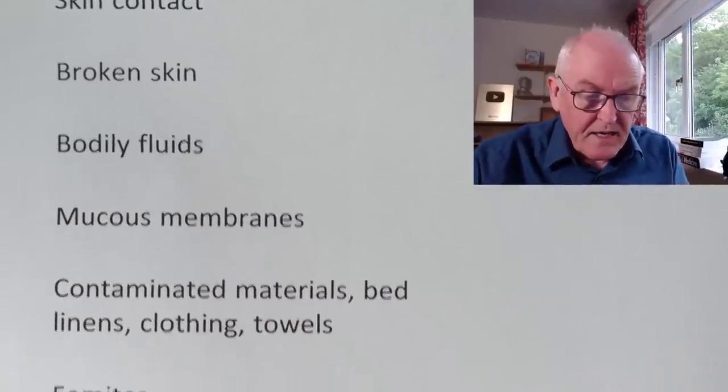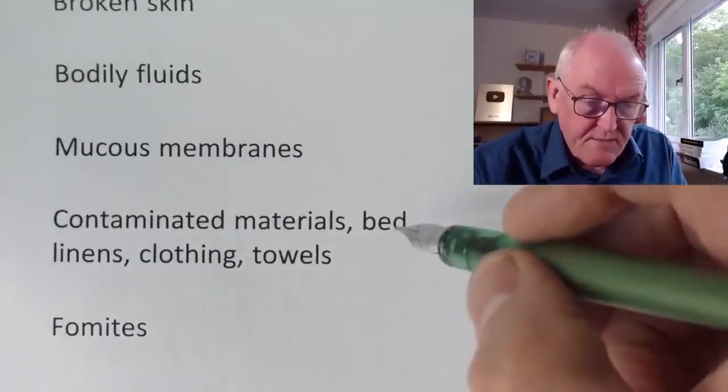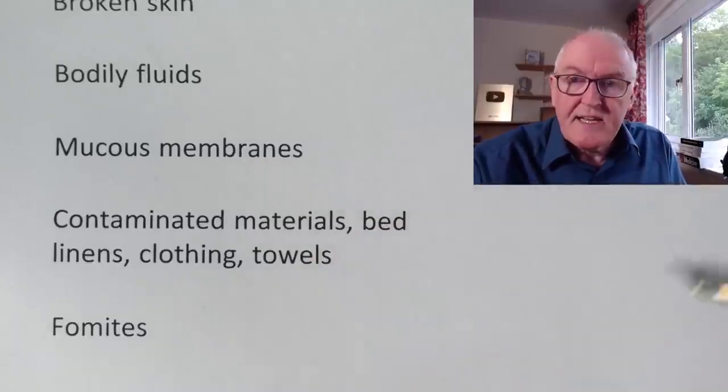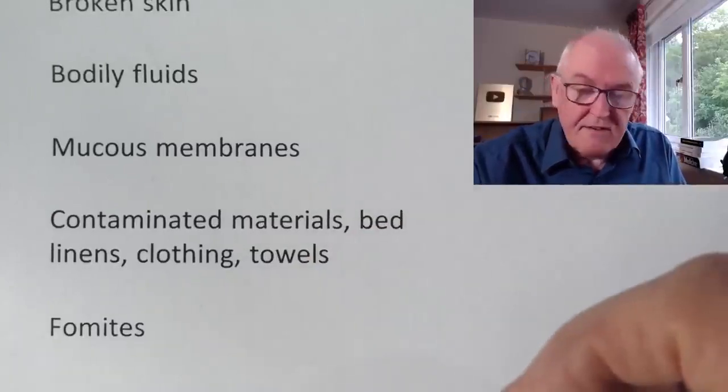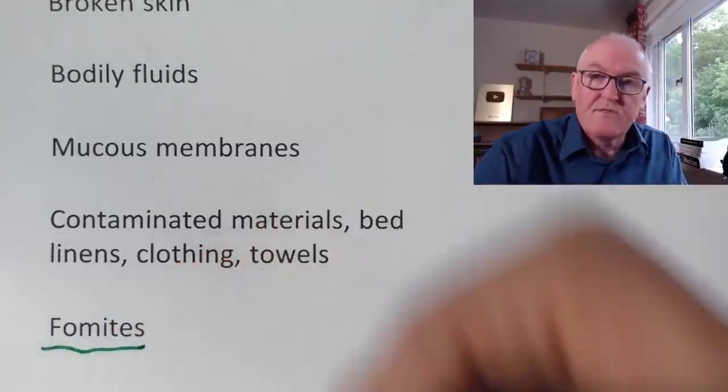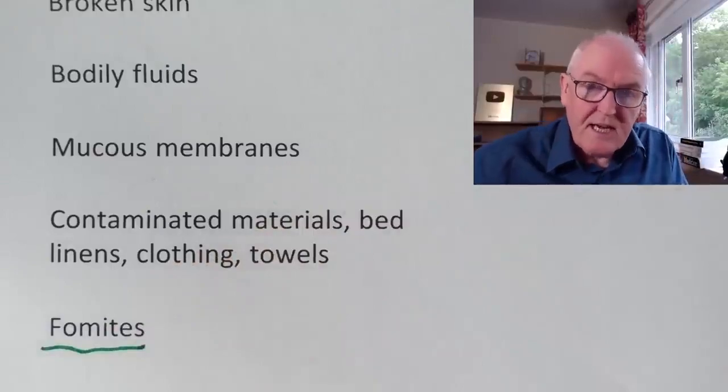It can also be spread through contaminated materials — bed linen, clothing, towels, anything else like that. A fomite is a physical object like a surface on which the virus can sit. Although the virus has been spreading in the male homosexual community at the moment, it's perfectly capable of spreading anywhere — that's just where it started off.